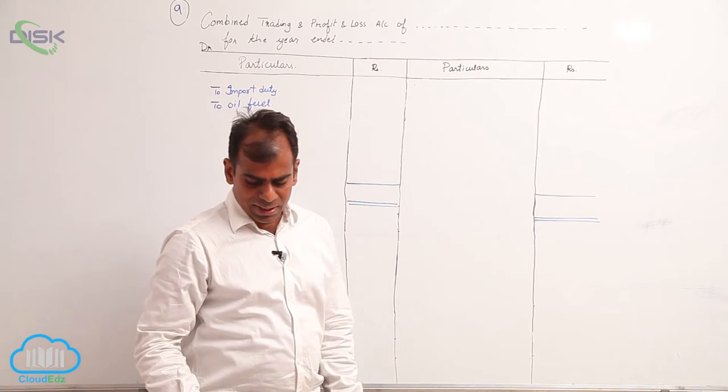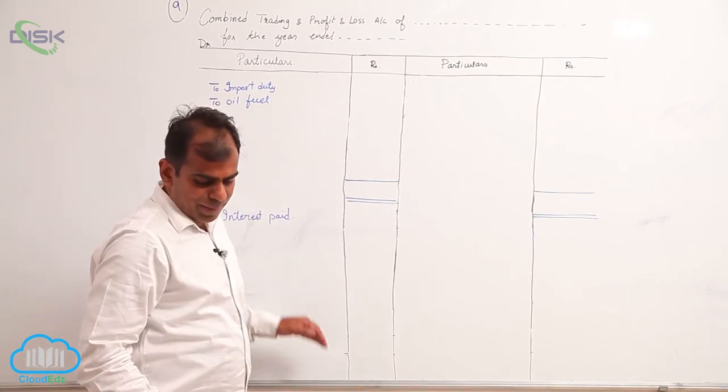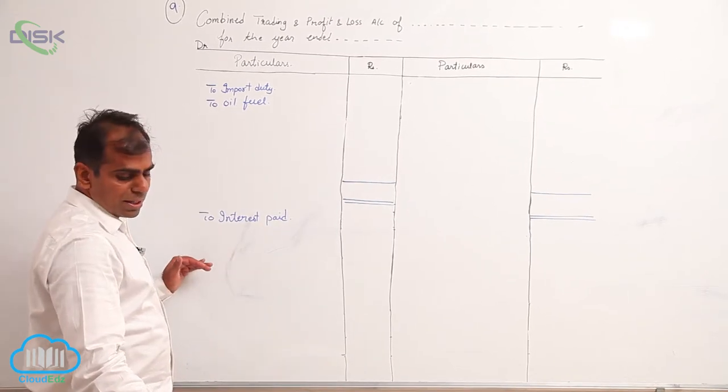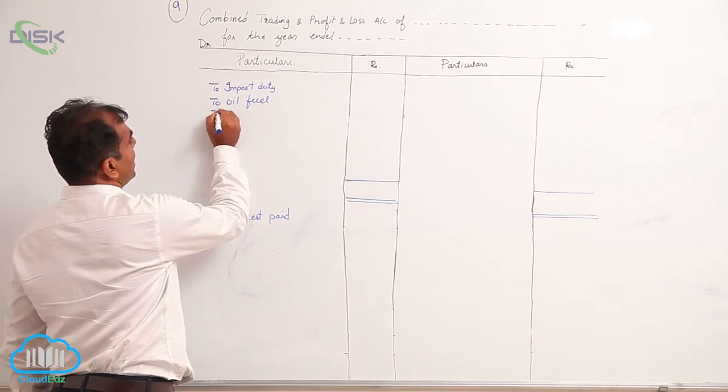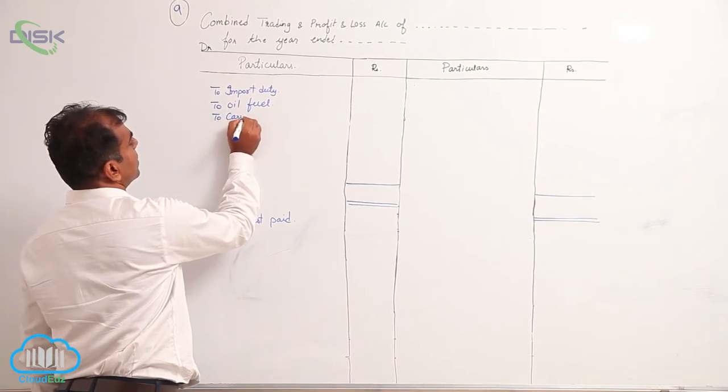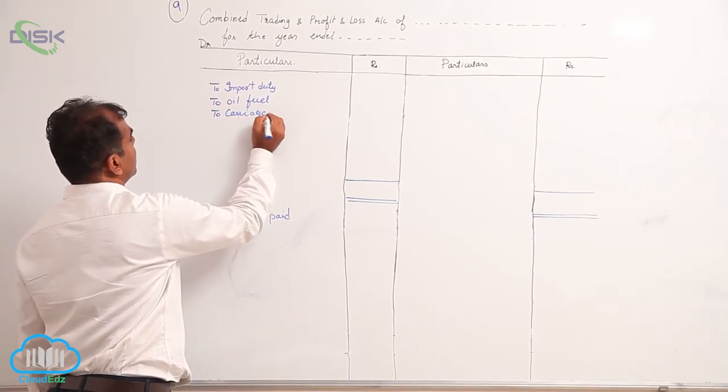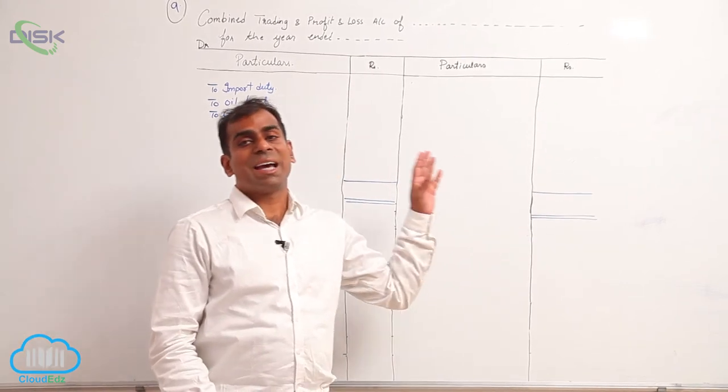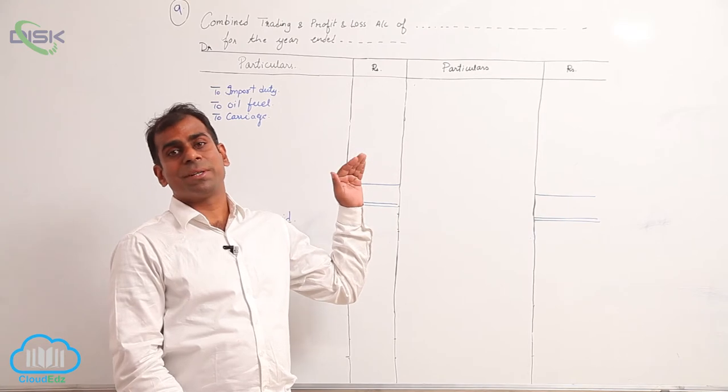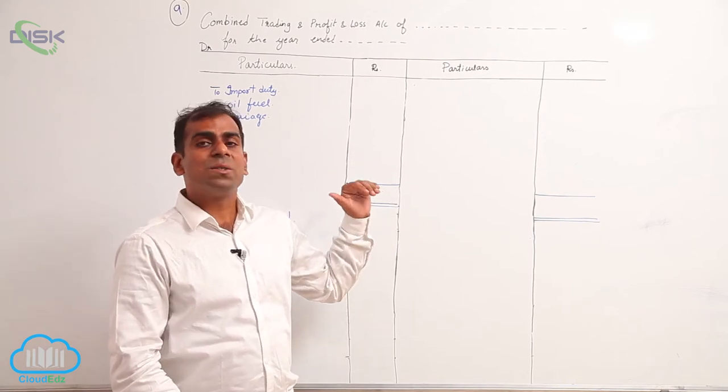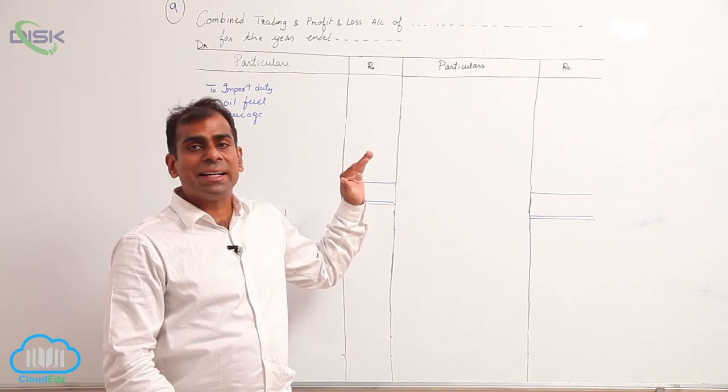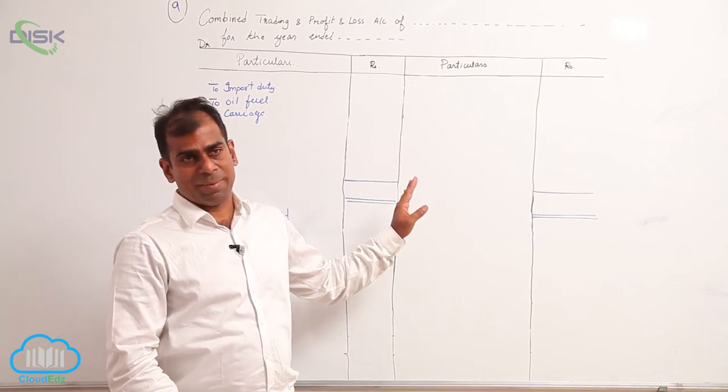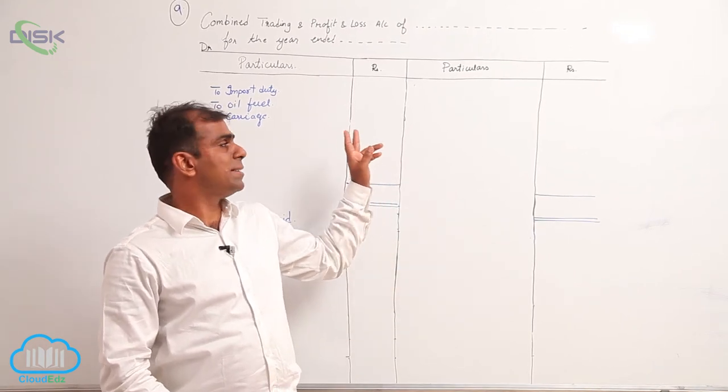Rent will appear in P&L account, carriage will appear in trading account. So some of the items we have run through. Let us see the other items. Credit balances are given - capital, as you know, is a personal account, so there is no place for personal and real accounts in trading and P&L.